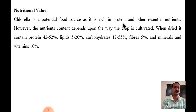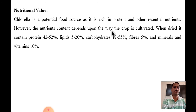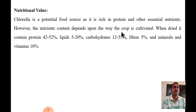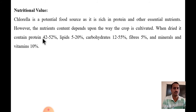Chlorella is a rich source of protein and other essential nutrients including small micronutrients, calcium, and potassium. However, the nutrient content depends upon the way the crop is cultivated and the proper nutrients provided for growth. When dried, it contains nearly 42 to 55 percent protein, 5 to 20 percent lipid, 12 to 55 percent carbohydrate, 5 percent fiber, and about 10 percent minerals and vitamins.